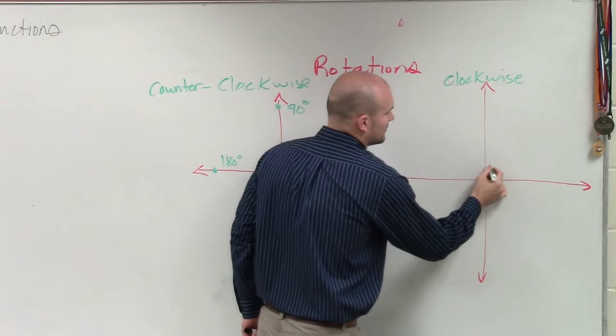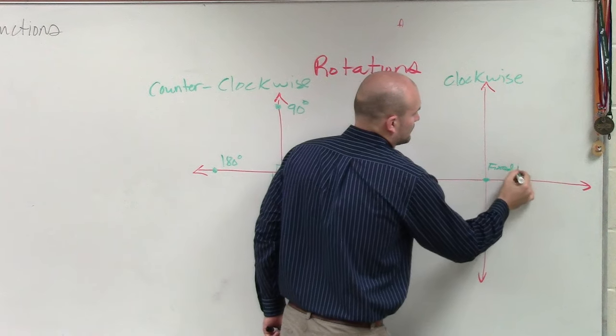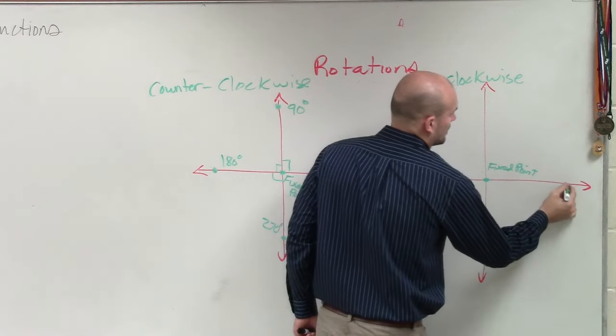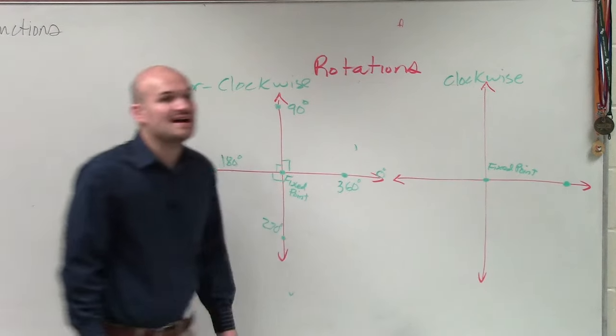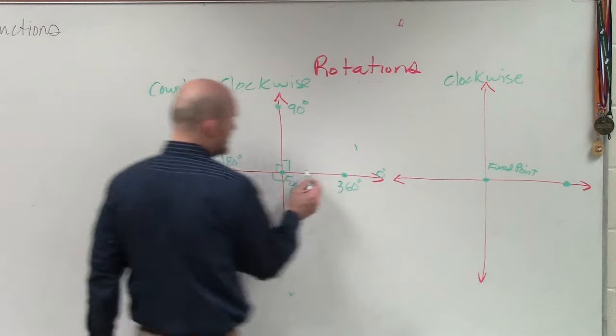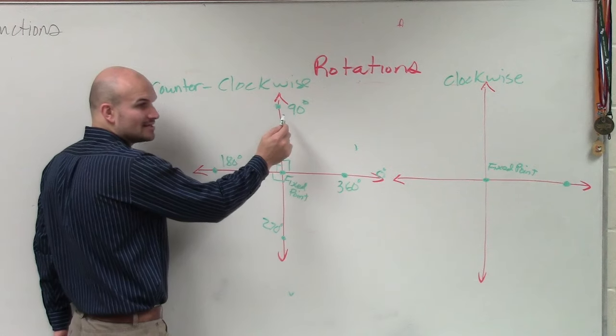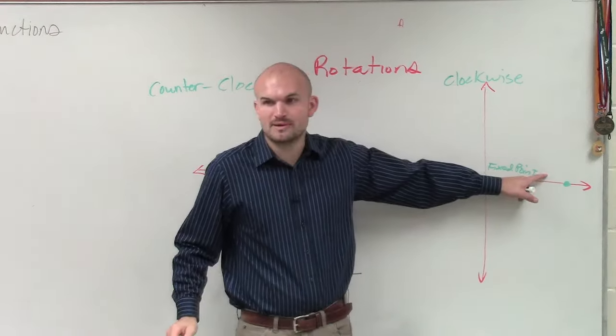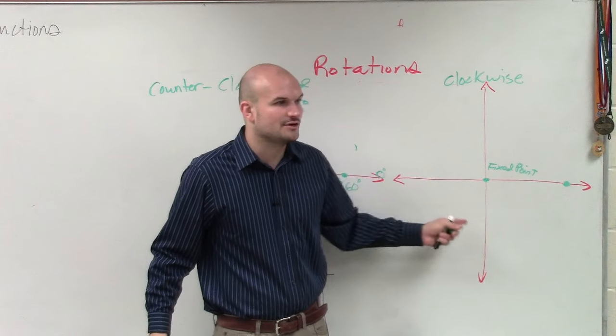So what's different about them is the same thing. Let's say we have our fixed point. And there's the point that I'm going to rotate. If I say rotate this clockwise 90 degrees, well, up here was 90 degrees, but that was counterclockwise. So 90 degrees over here would be where? Where would I put my 90 degree point?